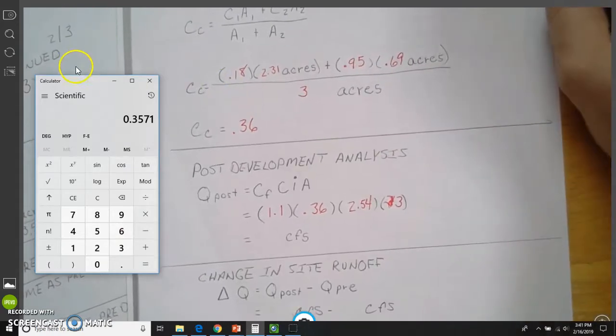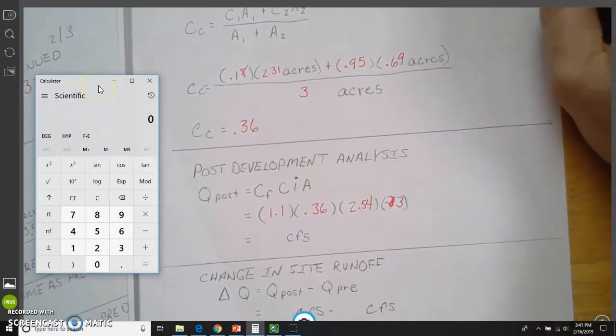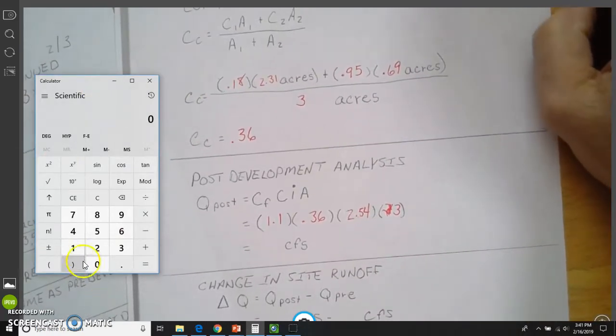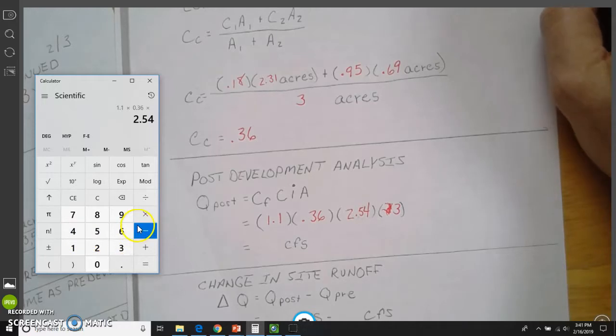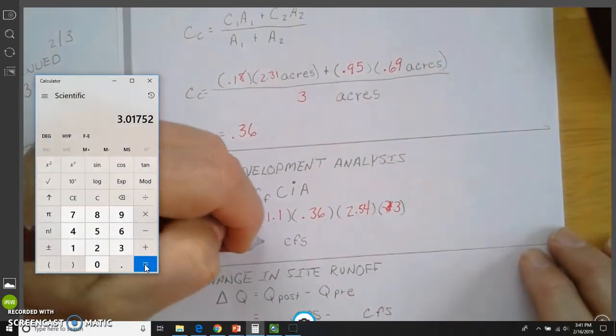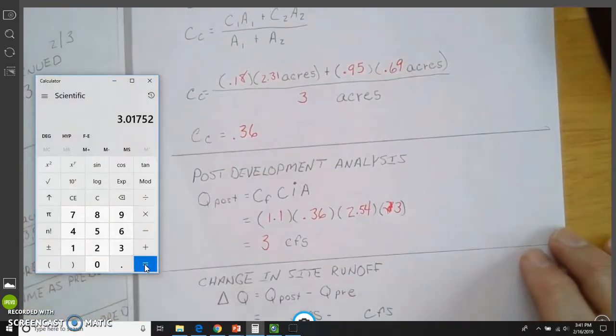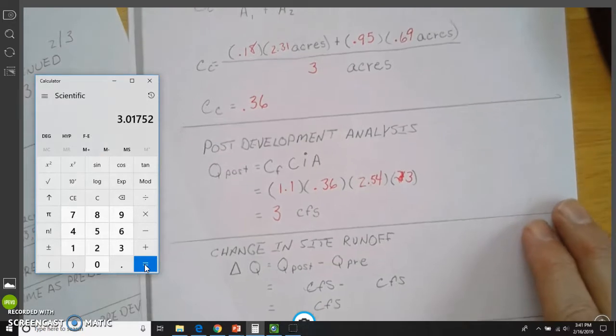So, math it out again here on the calculator. So we're going to take 1.1 times 0.36 times 2.54 times 3 equals, and that's, we're just going to round this, that's going to be 3 cubic feet per second.